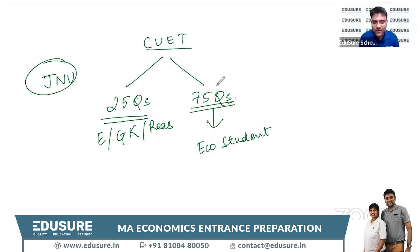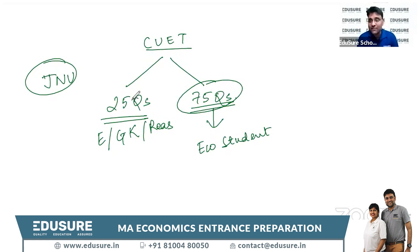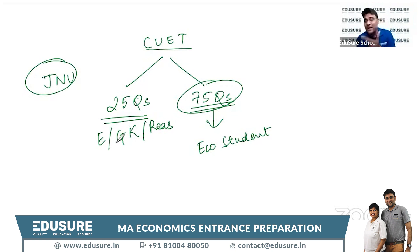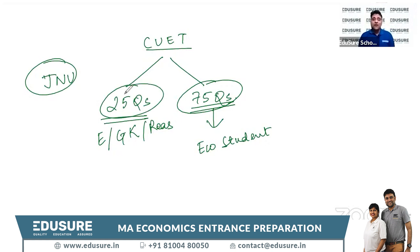JNU will be selecting students on the basis of the 75 questions only — they are not concerned with the first 25 questions. All other universities like University of Hyderabad, BHU, and BR Ambedkar have not yet officially mentioned anything, so we'll assume they will consider the first 25 questions as well. A student focusing only on JNU should focus on the 75 questions only.